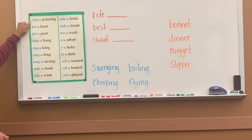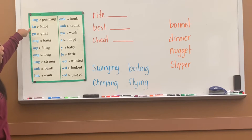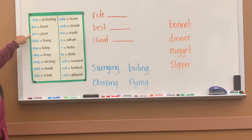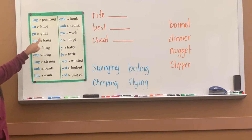I-N-G says 'ing' in pointing. K-N says 'n' in 'not'. G-N says 'n' in 'gnat'.